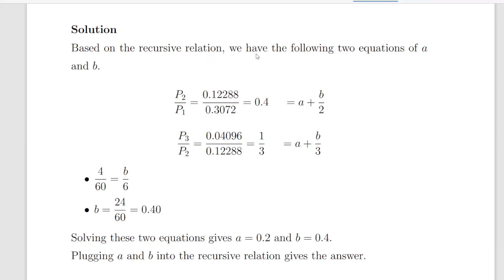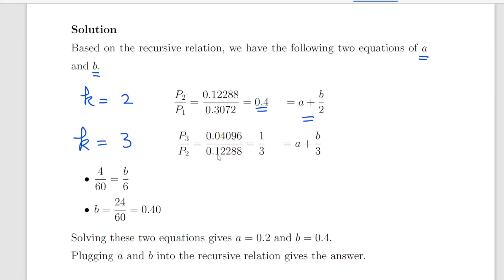Based on the recursive relationship, we have two sets of equations in terms of A and B. For K equal to 2: P2 divided by P1, that is 0.12288 divided by 0.3072, equals 0.4, and that equals A plus B divided by 2. For K equal to 3: P3 divided by P2, that is 0.04096 divided by 0.12288, equals one-third, and that equals A plus B divided by 3.